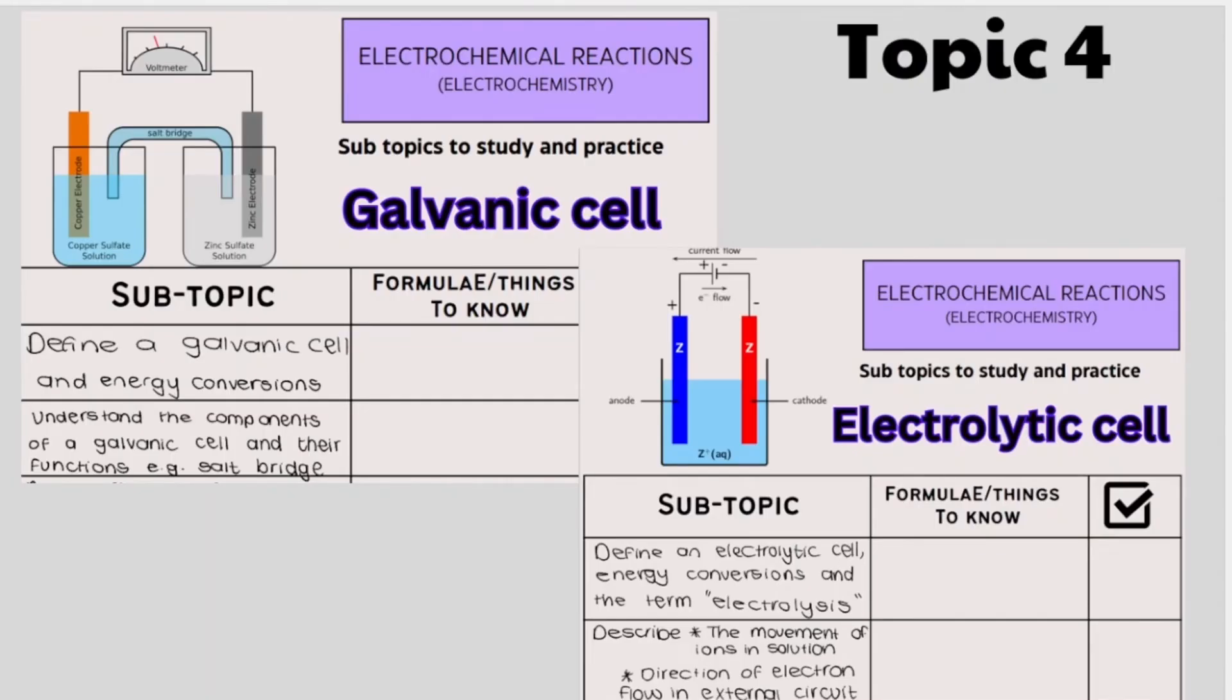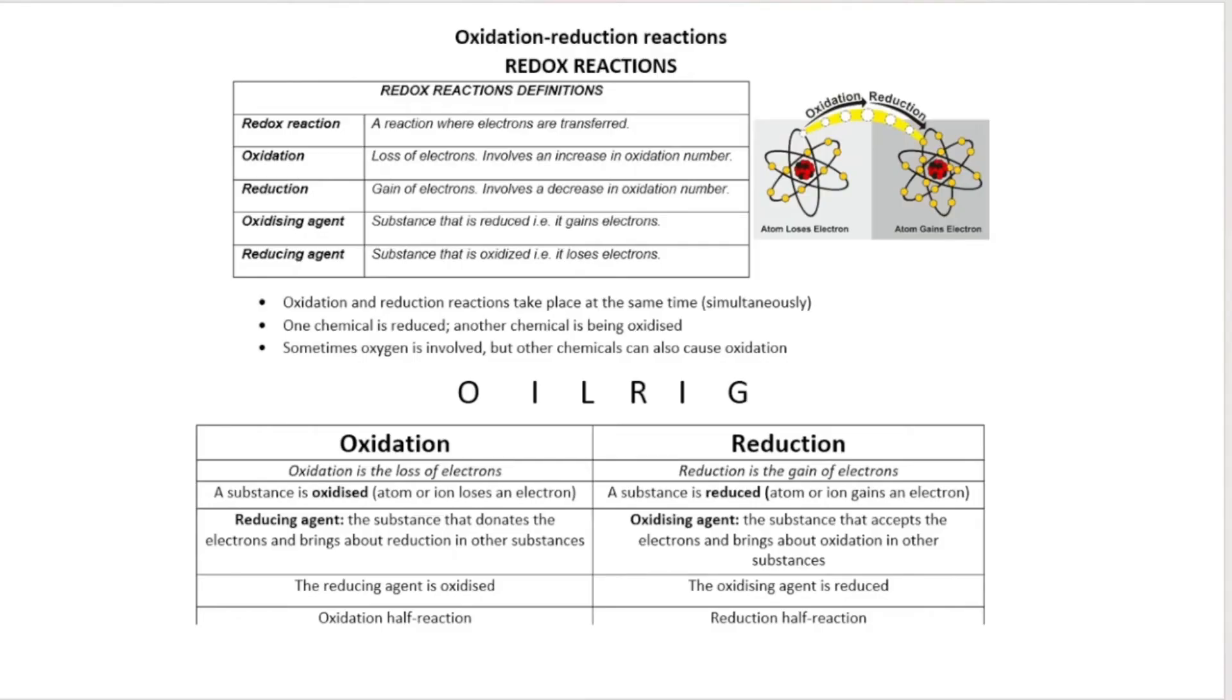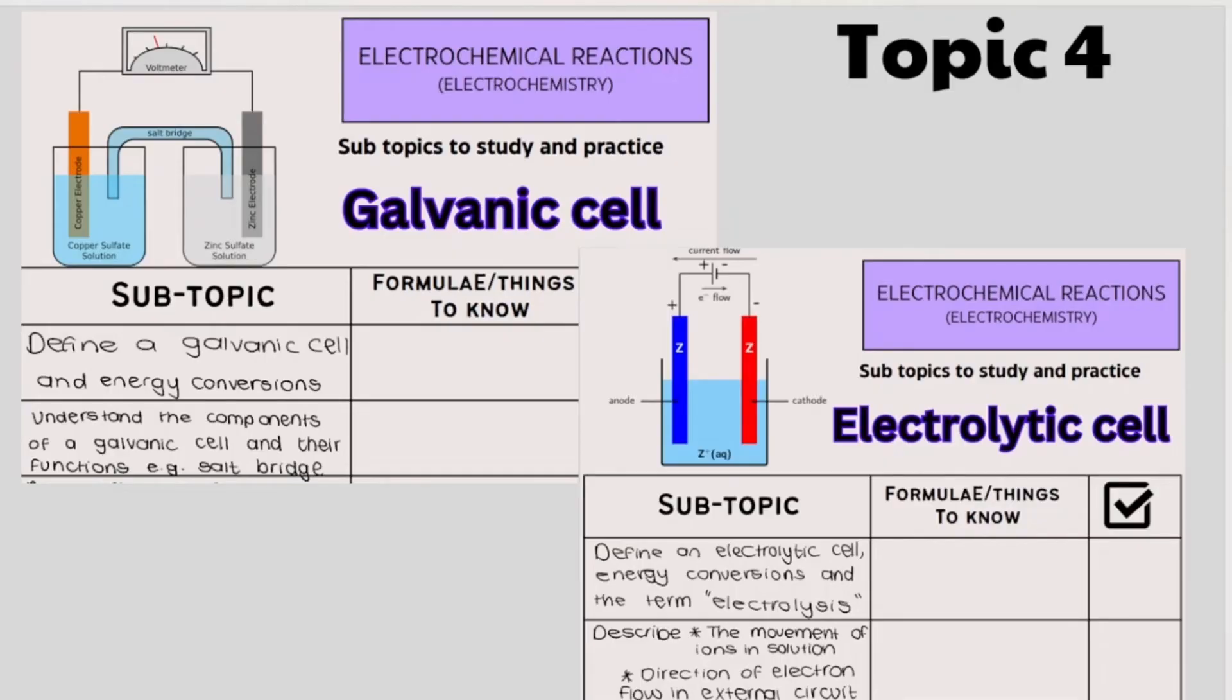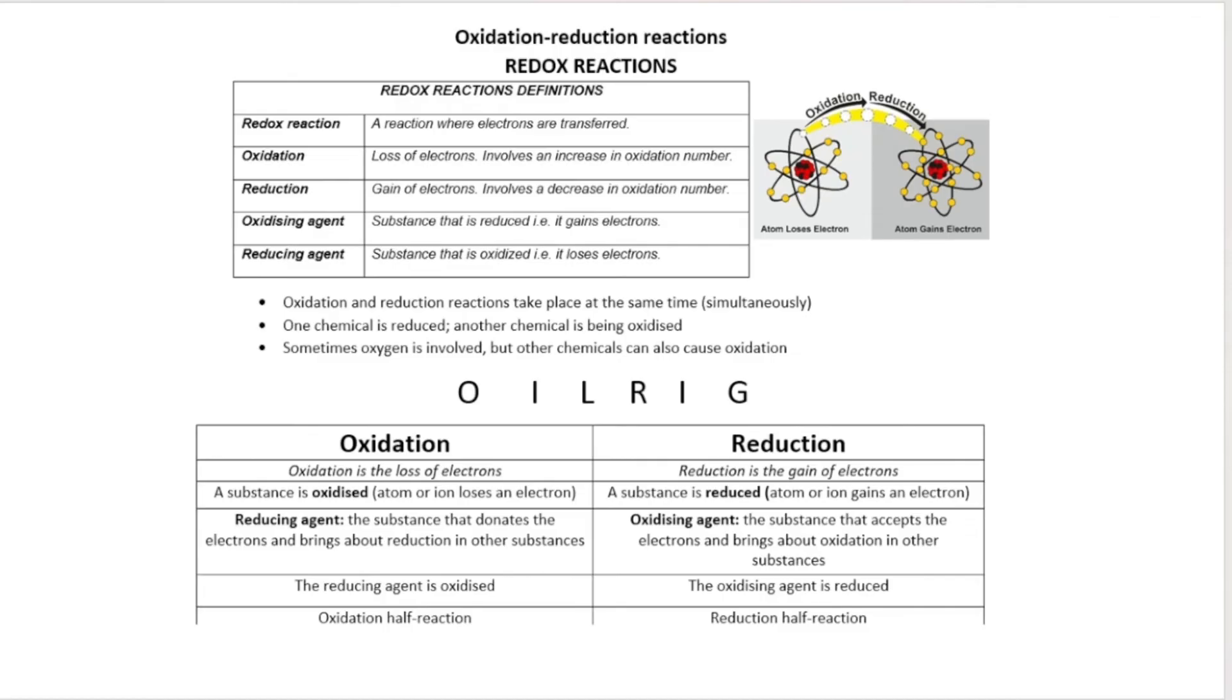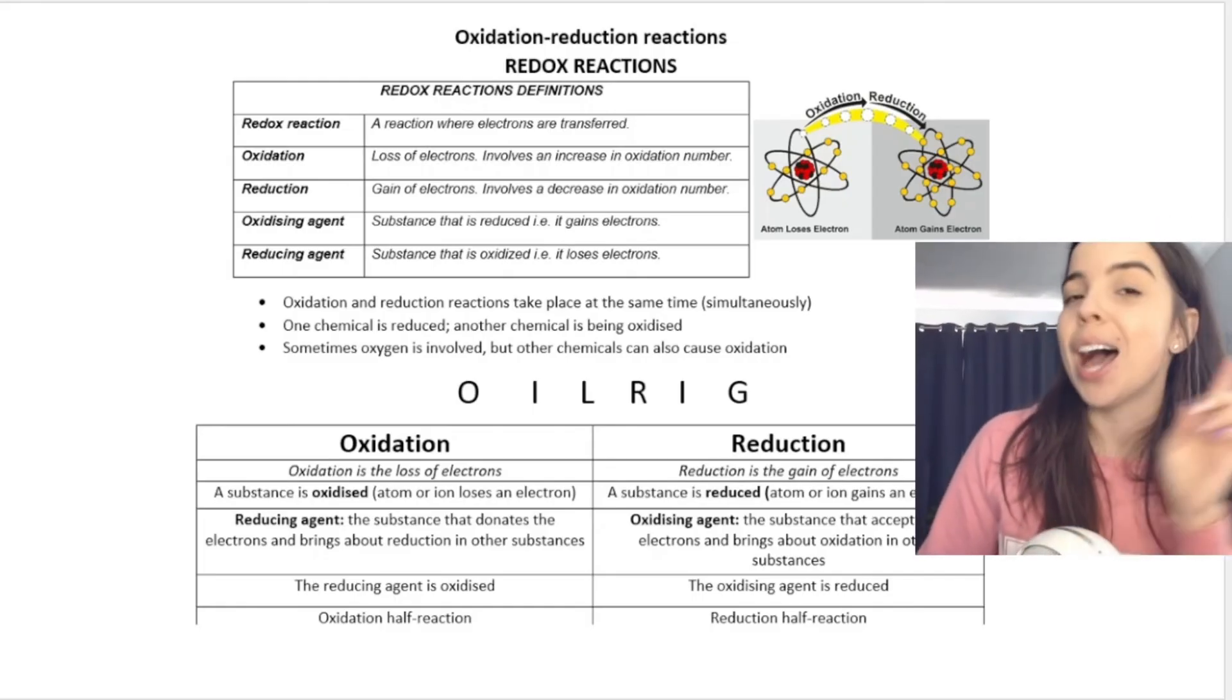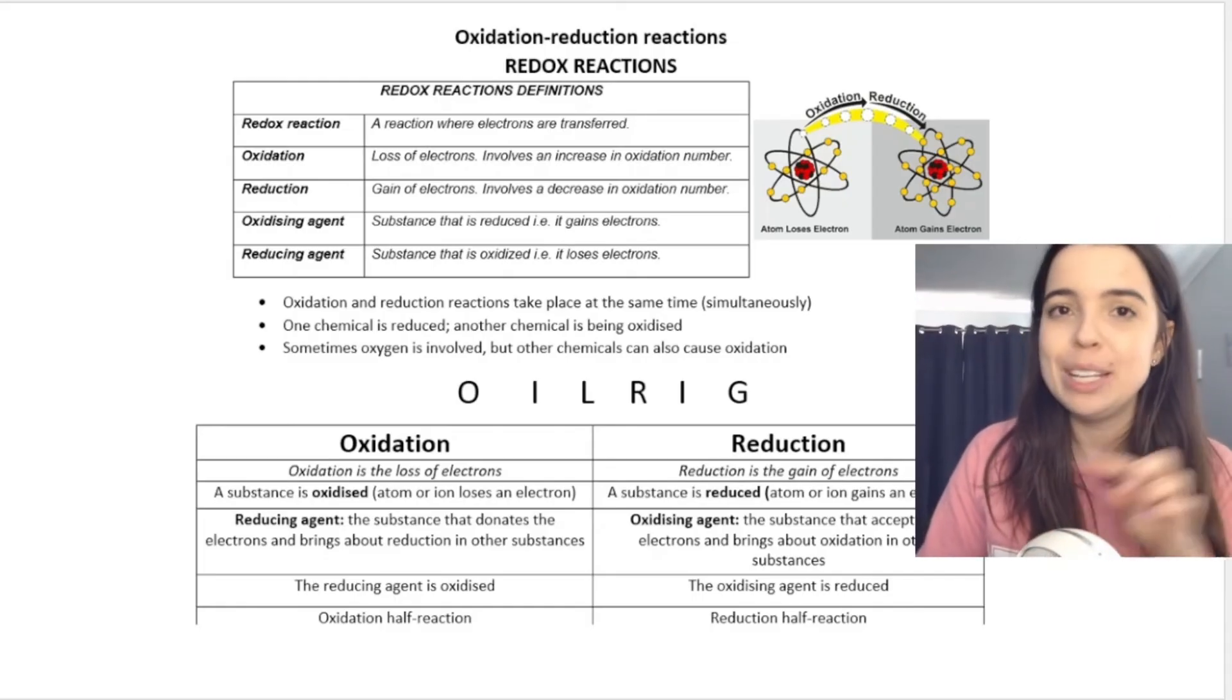Topic four, this is the only chemistry topic covered in term three, according to the ATPs, and it is based off of redox reactions or reduction oxidation reactions, which you should have covered in grade 10 or in grade 11. In this topic, we go over the galvanic cell and the electrolytic cell, and this topic is often called electrochemistry. So in order to prepare for this topic, as I mentioned, you can go over redox reactions. You may or may not have learned how to determine if a substance is oxidized or reduced using oxidation numbers. You may or may not have learned about oxidizing agent, reducing agents, and using table 4A or table 4B. If you haven't learned these things and you're thinking, what on earth is ma'am talking about? Don't worry, because I'll be going over this topic from scratch on this channel. So please make sure you've subscribed.